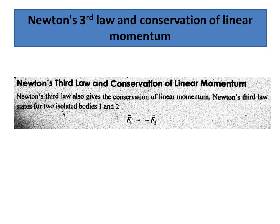To every action there is a reaction. Action and reaction are equal but opposite. So if F1 is the force a body exerts on another body, then the other body exerts an equal but opposite force. The minus sign shows that the two vectors are of equal magnitude but opposite direction — this is Newton's third law.